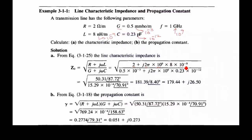So 8 into 10 power minus 9. The G value is given as 0.5 millimhos per meter. Millimhos means 10 power minus 3, so that's why 0.5 into 10 power minus 3, plus again j omega — j 2 pi f — you have to substitute 10 power 9. The capacitance value is given as 0.23 picofarad. Pico means 10 power minus 12, so that's why 0.23 into 10 power minus 12.